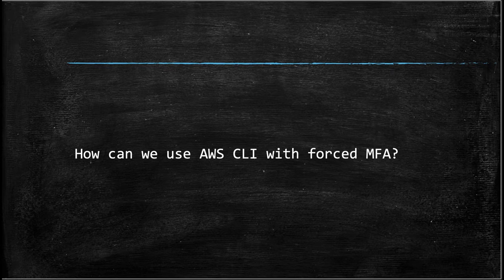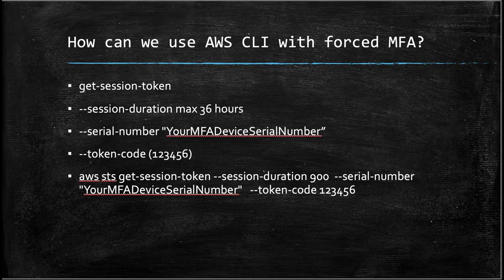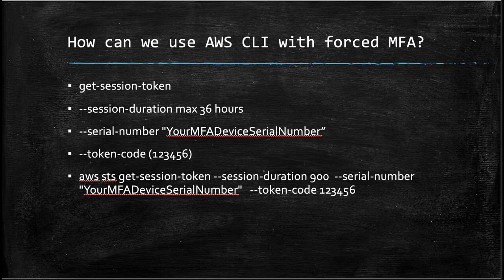As expected, it will not work. How can we use AWS CLI with forced MFA if normal credentials don't work? The answer is simple: we need to get temporary credentials using the get-session-token API, which takes as parameters session duration (maximum 36 hours), serial number (your MFA device serial number), and token code (the six digits from your authenticator app — in my case, Google Authenticator).